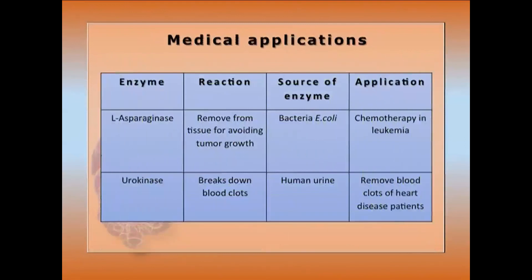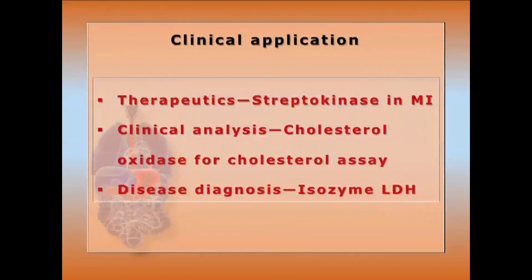Medical applications: L-asparaginase from E. coli removes asparagine from tumor cells and is used as a chemotherapeutic agent. Urokinase from human urine breaks down blood clots for heart patients. Clinical applications: streptokinase is used for therapy of myocardial infarction. Cholesterol oxidase is used to analyze blood serum cholesterol.